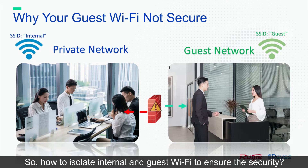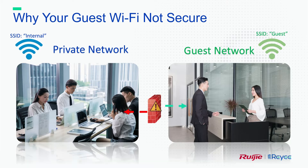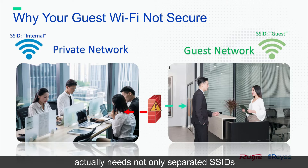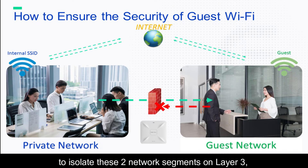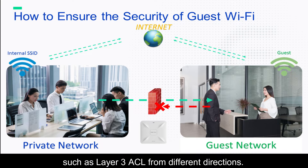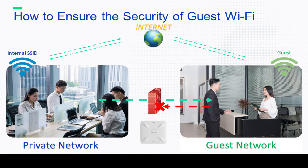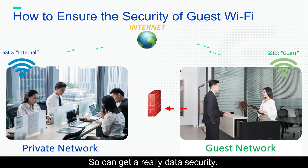So how do you isolate internal and guest Wi-Fi to ensure security? For a really secure Wi-Fi, you need not only separated SSIDs, but also different network segments, and other technical measures to isolate these two network segments at Layer 3, such as Layer 3 ACL from different directions. This way you can achieve truly better security.